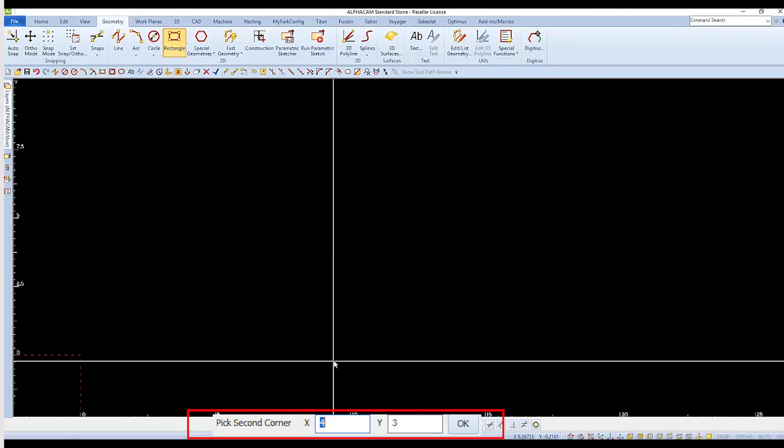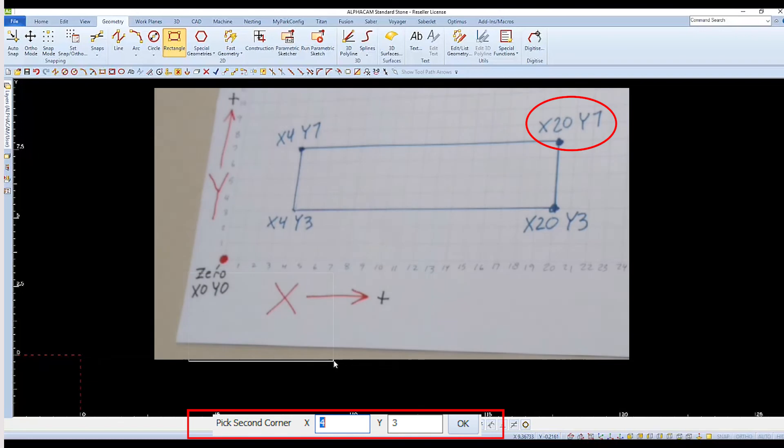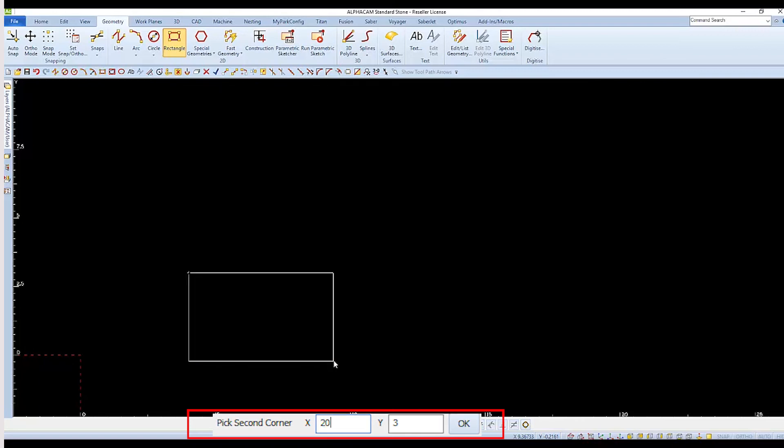Now it is asking for the coordinates for the second corner. This opposite corner uses x20 and y7. So we can type in 20 and Enter for the x and then 7 and Enter for the y.